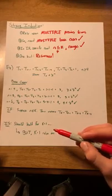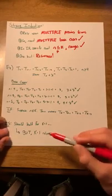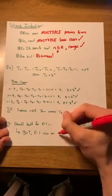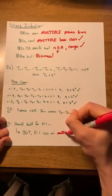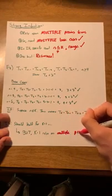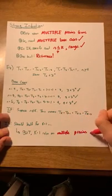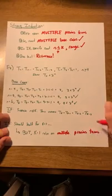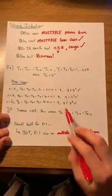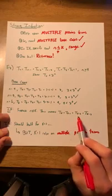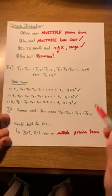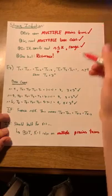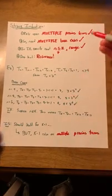In our inductive step, we said that this should hold for k plus 1, but we remember that k plus 1 relies on multiple previous terms. This is specified by the t of k minus 1, t of k minus 2, and t of k minus 3. Again, all of our characteristics are met.